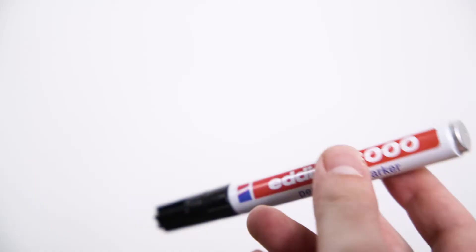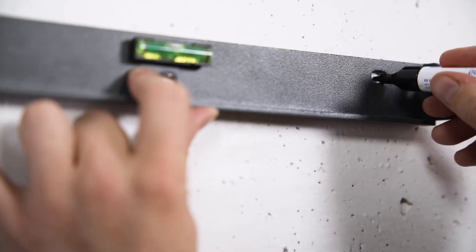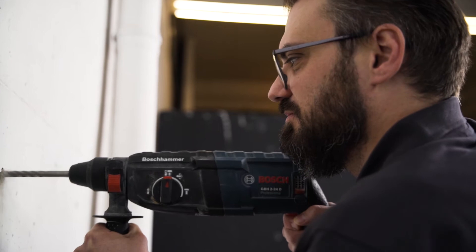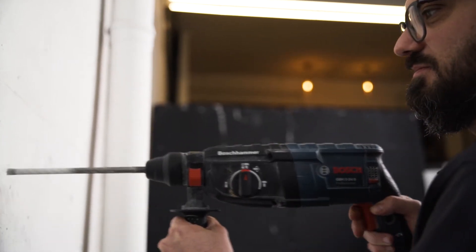Before you start drilling, you should make sure that there are no wires running through the wall that you could damage. Take your drill with a 10 mm drill bit and drill at least 70 mm deep into the wall at the marked points.